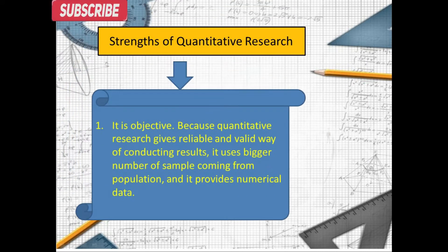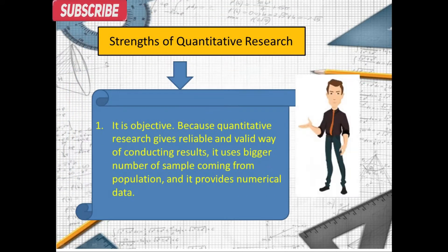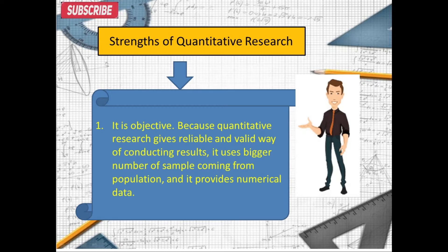1. It is objective. Because quantitative research gives a reliable and valid way of conducting results, it uses a bigger number of samples coming from the population, and it provides numerical data.